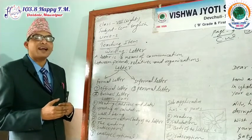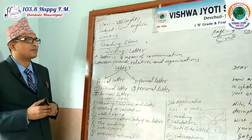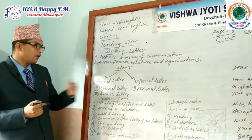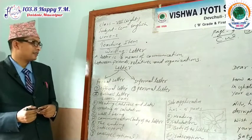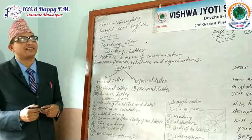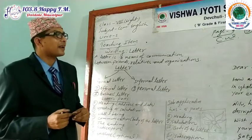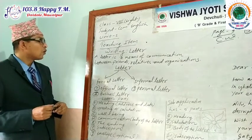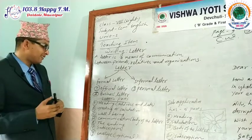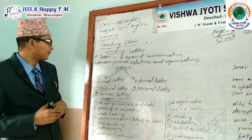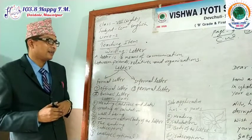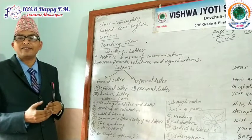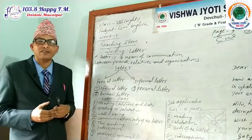Now let's look at the parts of a letter, as mentioned in your textbook page number 9. A letter has the following parts: heading — which includes address and date; greeting — which is called salutation; well-being, meaning 'how are you'; the body of the letter, which is the middle part; and the ending — which is the subscription, such as 'yours faithfully,' 'yours sincerely,' and so on.